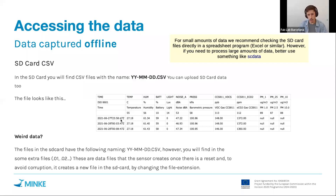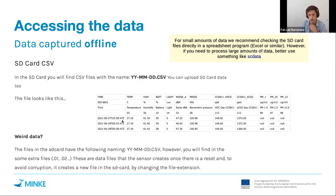For Spain in summer time, for example, the UTC timestamp would be two hours before the local time the data was recorded. The type of conversion you need to apply will depend on your location.